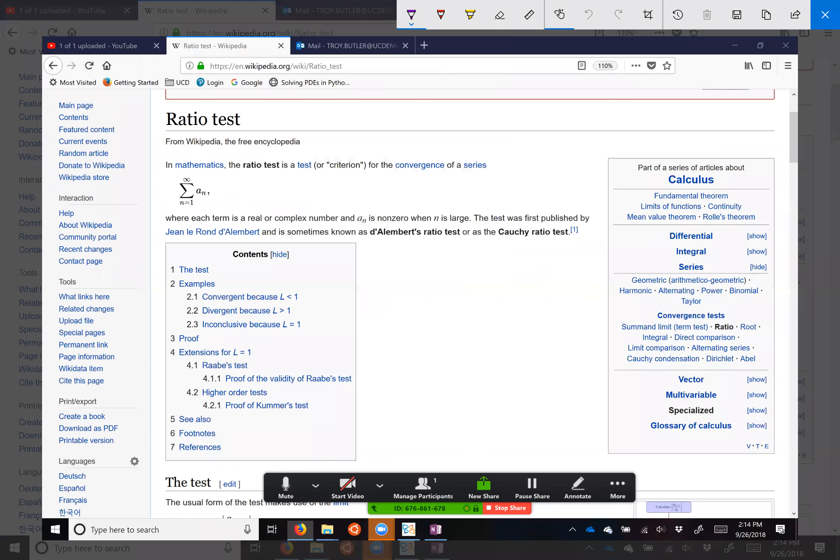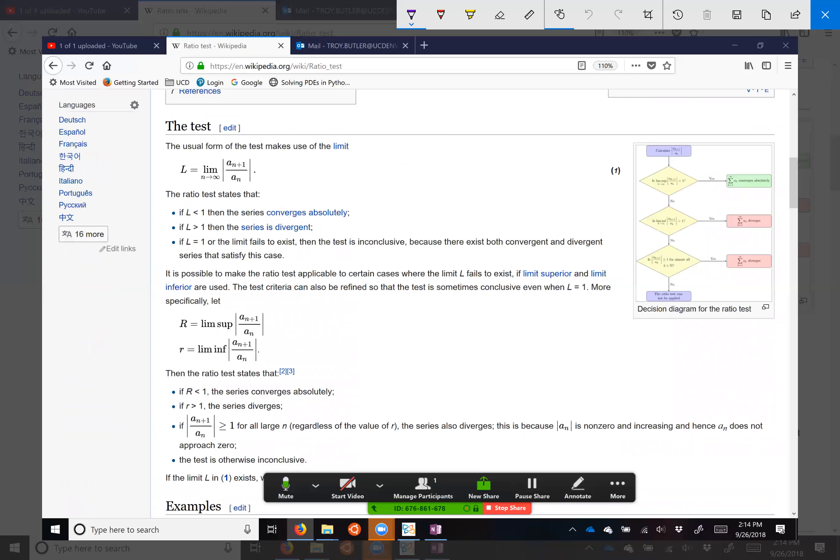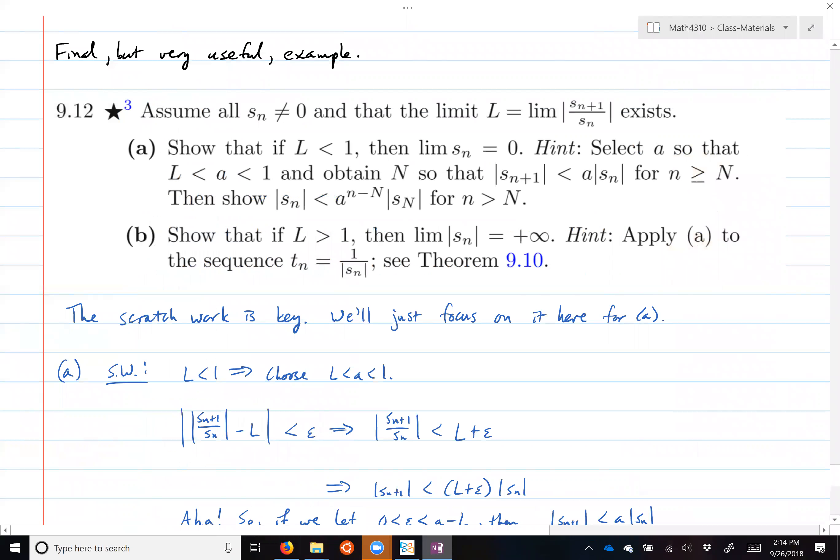The first problem is to show that if the limit is less than 1, then the limit of S_n is actually zero. And if you look at the structure of this, it should ring a bell. I'm going to show you something quickly on the screen here from a Wikipedia article on the ratio test from series.